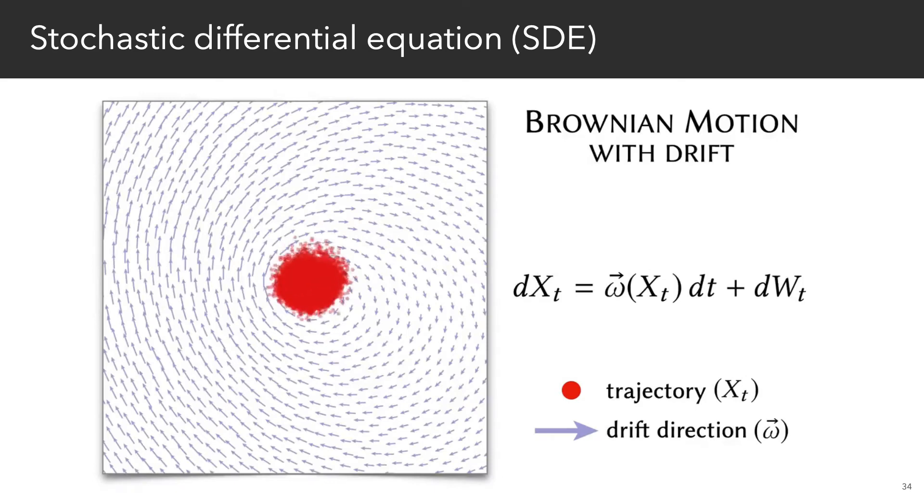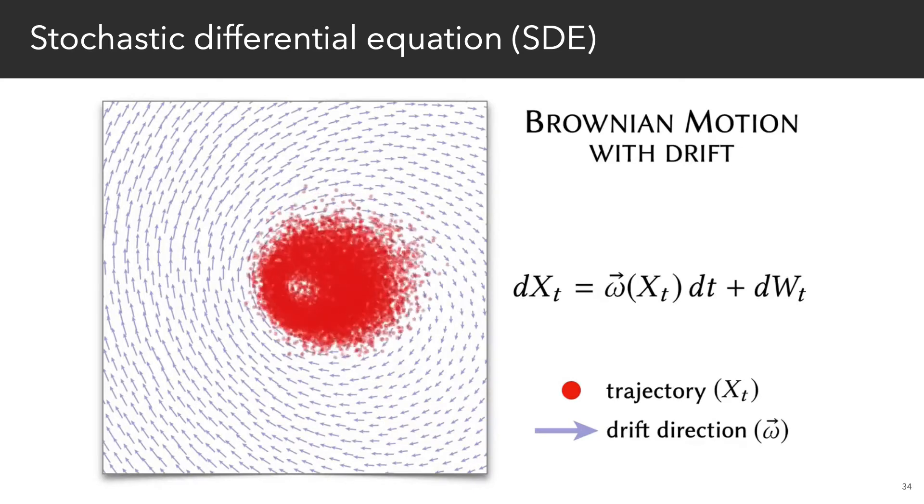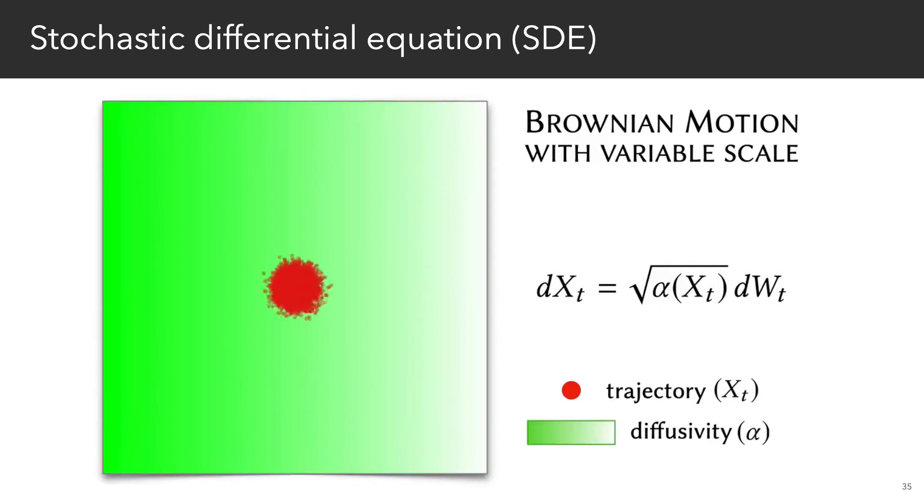Brownian motion is often used to model everything from moving molecules to fluctuations in stock prices. Adding Brownian motion to our earlier ODE gives a more general diffusion process, which we can think of as either a deterministic particle with noise or a random walk with drift.